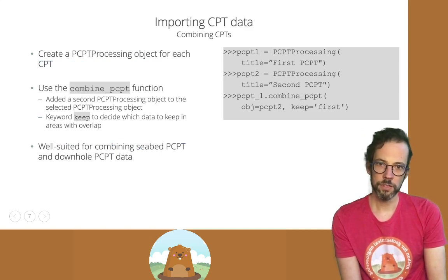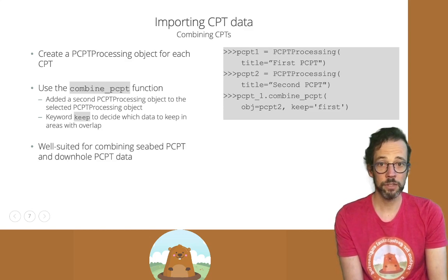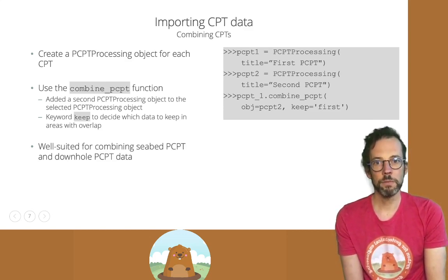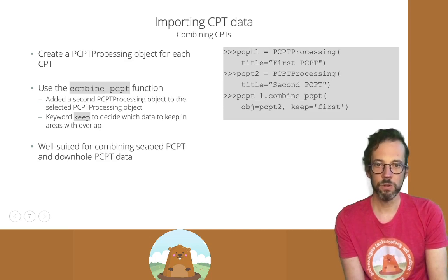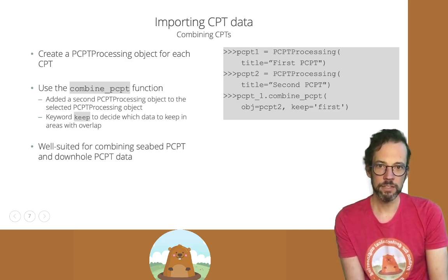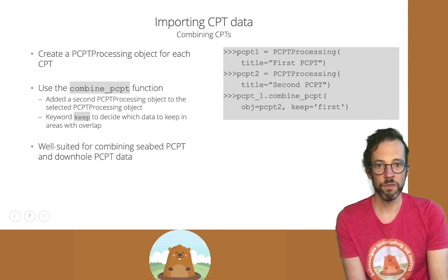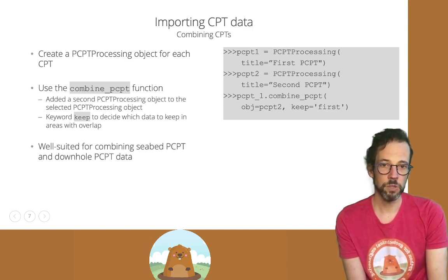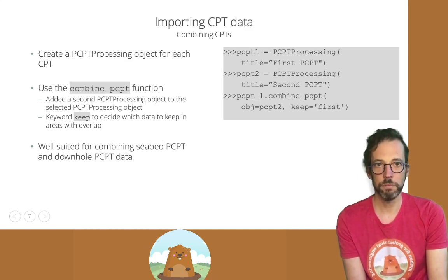Groundhog also contains functionality for combining CPTs — for instance if a CPT had to be restarted or some drilling out had to take place and there are CPTs from different files that have to be combined. We can simply create a PCPT processing object for each CPT and then use the combine PCPT method, specifying which data needs to be kept. This is well suited for cases where we have a CPT from the seabed combined with a downhole CPT.